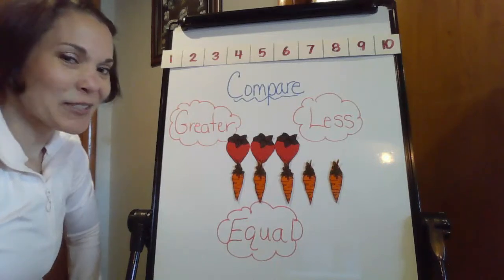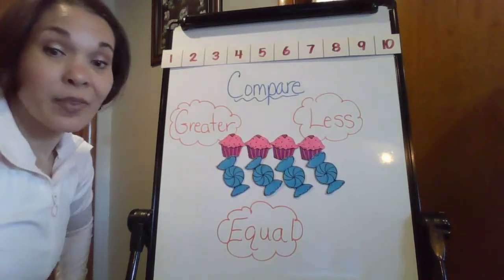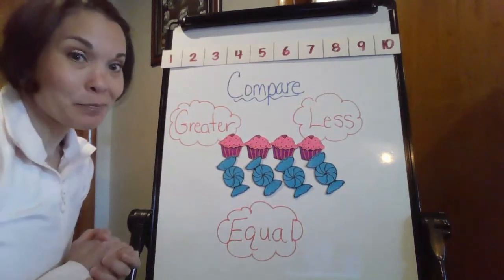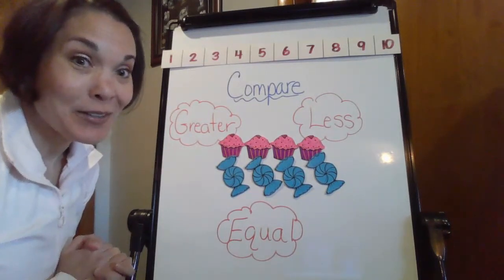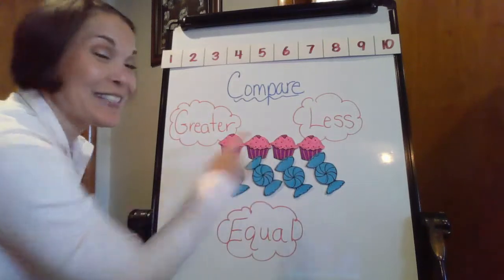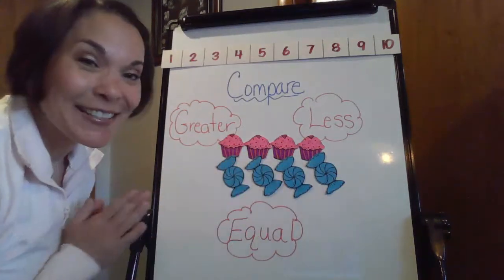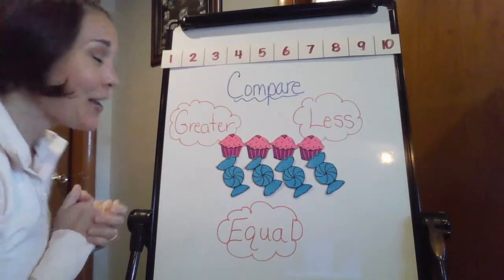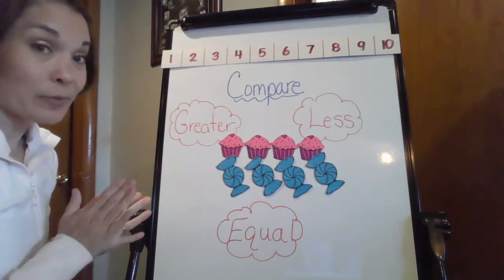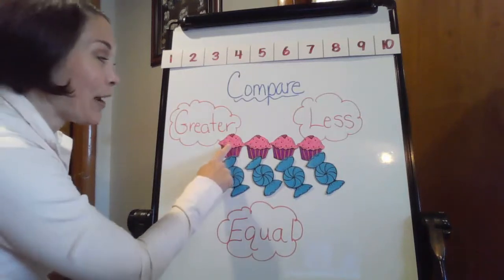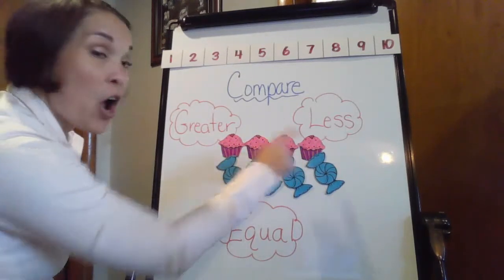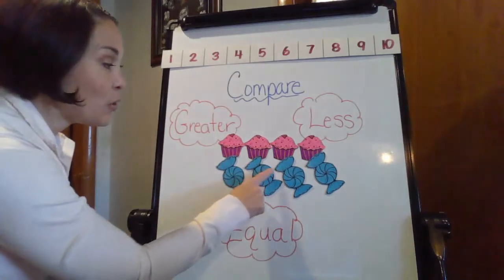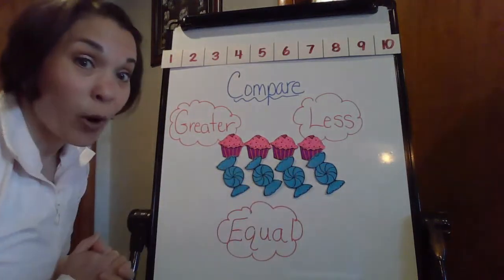All right, you ready for one more example? Here we go. And we're back. So right now, as you can see, I hope you're ready for some sweet tooth action here because I see some cupcakes and I see some candies. I hope I'm not making you hungry today, boys and girls. What I'm looking at here now — let's do our counts: one, two, three, four cupcakes and one, two, three, four candies.